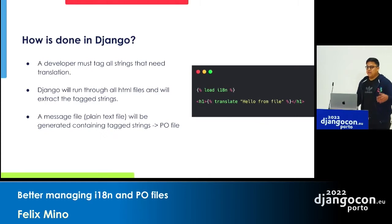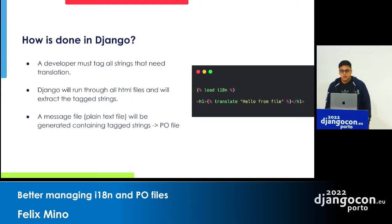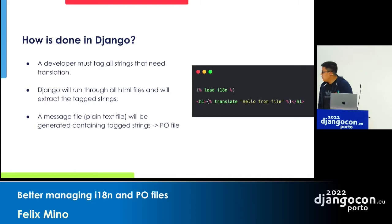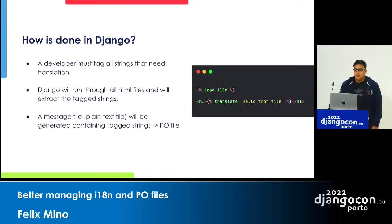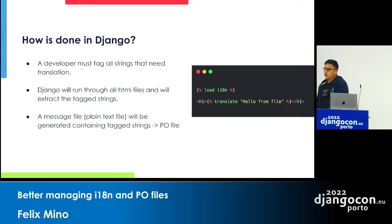So how's it done in Django? I'm going to focus this talk on static templates and translated static pages. A developer must tag the strings that need translation — we load the internationalization tags in our HTML files, then we can use keywords like 'translate', 'block translation', and so on. Then with a couple of CLI commands, Django will go through those HTML files, extract the target strings, and put them in a file called a PO file.